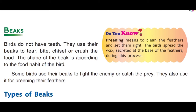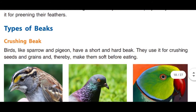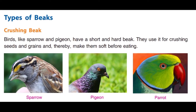Kuch birds apne chonch ka istamal apne dushmanon se ladne ke liye karte hain, kuch apne prey ko pakarne ke liye. Kuch birds hawa mein udate huye insects ko apne chonch se pakarte hain. Aur sath hi kuch birds apne feathers ki preening ke liye istamal karte hain. Preening means to clean the feathers and set them right. During this process, birds spread the wax secreted at the base of their feathers over them.